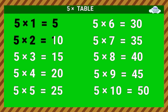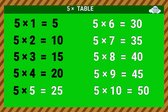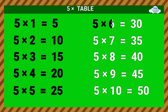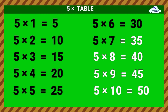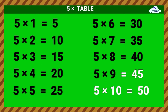5 times 2 equals 10. 5 times 3 equals 15. 5 times 4 equals 20. 5 times 5 equals 25. 5 times 6 equals 30. 5 times 7 equals 35. 5 times 8 equals 40. 5 times 9 equals 45.